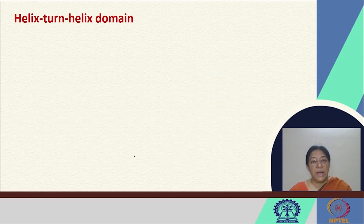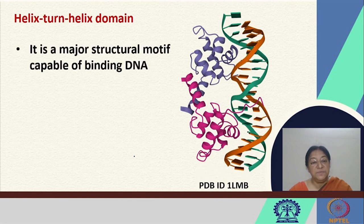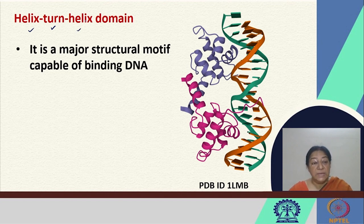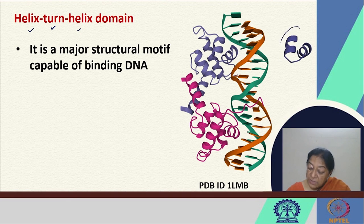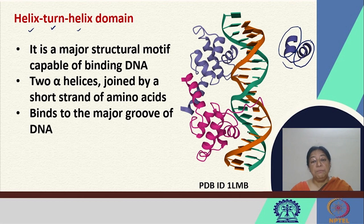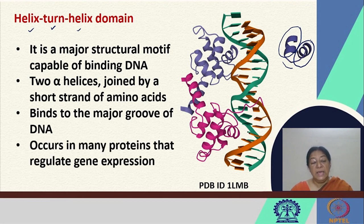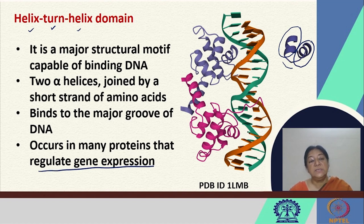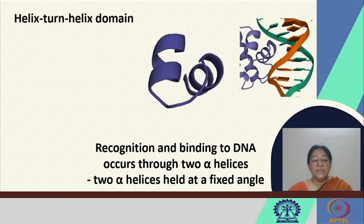The helix turn helix domain, as the name suggests, has a specific helix turn helix association. It is a major structural motif that is capable of binding DNA — a helix, a turn, and another helix. The two alpha helices are connected by a short strand of amino acids forming a turn. This can bind to the major groove of the DNA and it occurs in proteins that regulate gene expression.